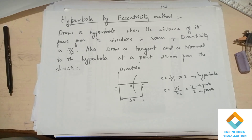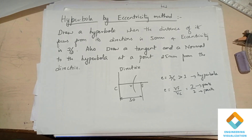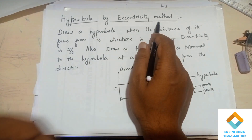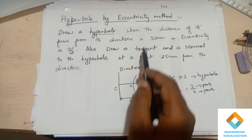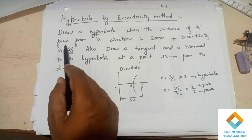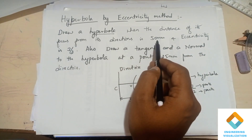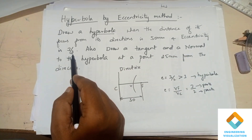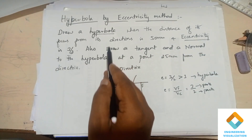Welcome to the engineering visualization channel. Today we are going to construct a hyperbola by the eccentricity method. We will draw a hyperbola where the distance of its focus from its directrix is 50 mm and the eccentricity is 3/2.